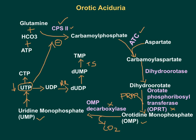Because UTP feedback inhibition is lost, CPS2 activity increases, and accordingly ATC activity increases, dihydroorotase activity increases, and dihydroorotate accumulates, which in turn increases the OMP molecule. Overall, what happens is there will be accumulation of orotate. That is why you see orotic aciduria — excess orotate — in UMP synthase enzyme deficiency.